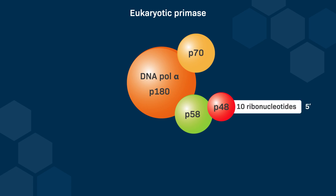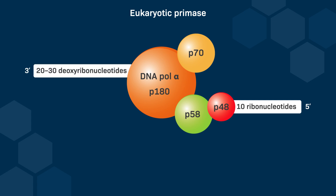The 5' region of the primer, which is pivotal in initiating replication, consists of approximately 10 ribonucleotides that are synthesized by the RNA polymerase p48. In contrast, the 3' region of the primer, which is synthesized by DNA polymerase alpha, consists of 20-30 deoxyribonucleotides. This chimeric nature ensures efficient and accurate initiation of DNA replication in eukaryotic cells.